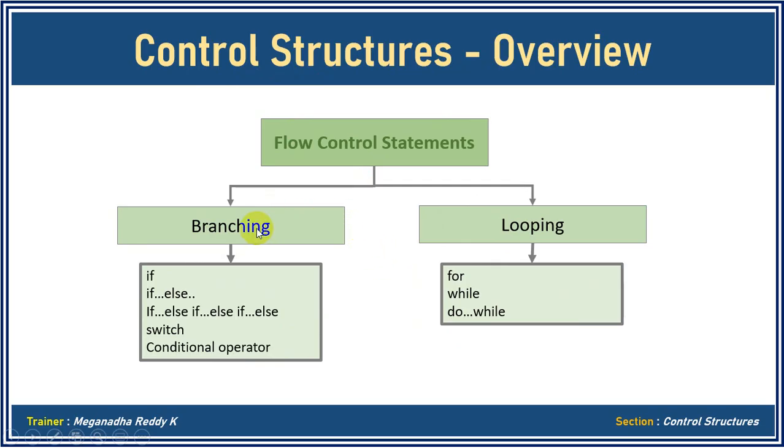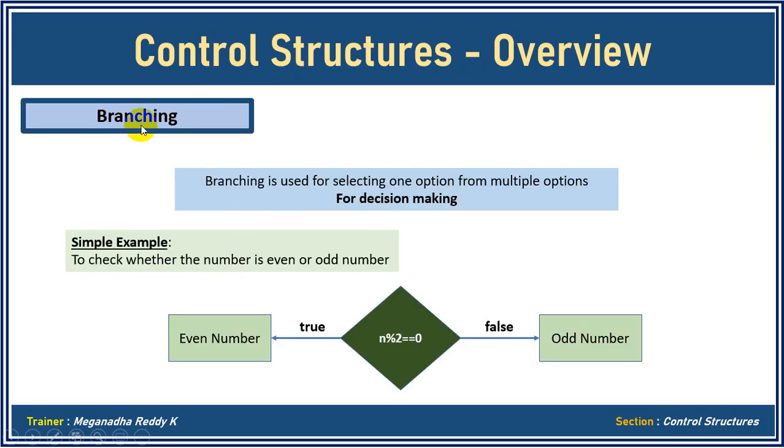So let's see what is branching in a very high level. So branching is used to select one option from multiple options for decision making. For example, a simple example: I want to check whether the given number is even or odd number. So I'll write here if n modulo two - so modulo two is used to see the remainder. So if let's take there is number six, if six modulo two, and I used to check equal to or not using double equals to is zero. Now obviously six modulo two is zero. If it is satisfied, I'll print even number. Else I'll print odd number. So this is called branching. So only one we are doing it in this.